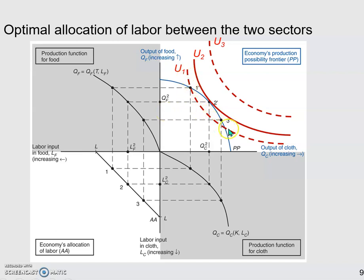U1 is achievable, but it's not the best the economy can do. The economy can achieve a higher level of satisfaction at U2. So that's why here we find point 2 is the optimal combination between food and cloth.